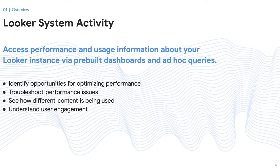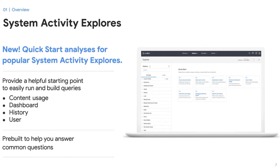System Activity is modeled automatically and dashboards can be accessed via Looker's admin menu. As with any other dashboards, you can download, schedule, or drill down into System Activity metrics and elements. Besides the five pre-built dashboards, System Activity comes with 18 different explorers, so the best part is that you can create your own dashboards to monitor and analyze your Looker instance according to your preferences and needs.